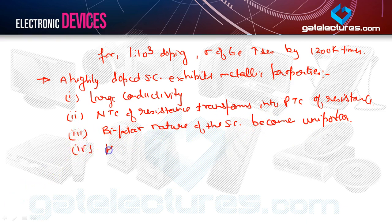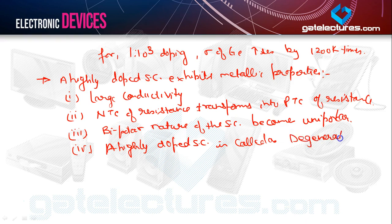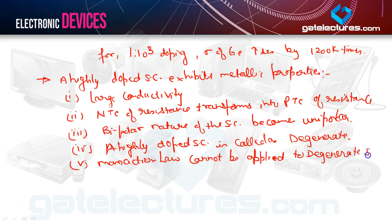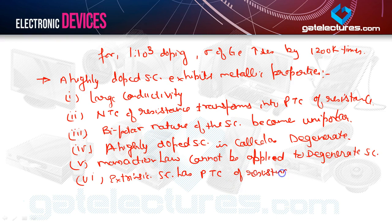A highly doped semiconductor is called a degenerate semiconductor, and the mass action law cannot be applied to a degenerate semiconductor. Also note that extrinsic semiconductors have PTC of resistance, while intrinsic semiconductors have NTC of resistance.